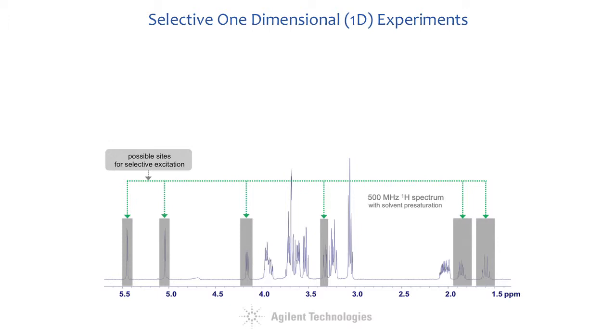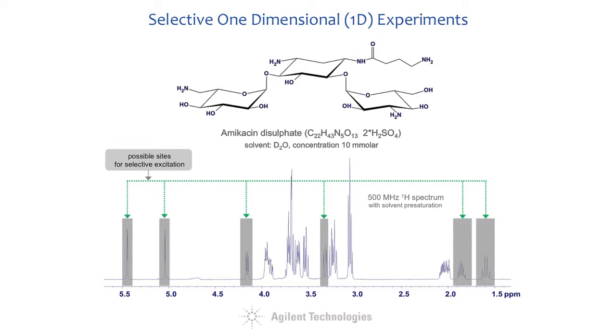Agilent's VNMRJ3 software is fully compliant with all these criteria. For demonstration purposes, we have chosen amikacin disulfate, a natural antibiotic dissolved in deuterium oxide at a concentration level of 10 millimolar. We use a 500 megahertz DD2 console and a 1 NMR probe.